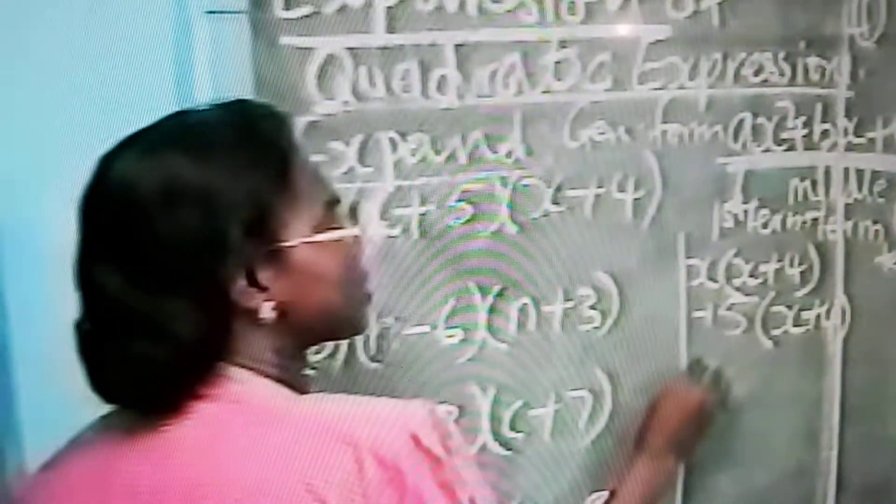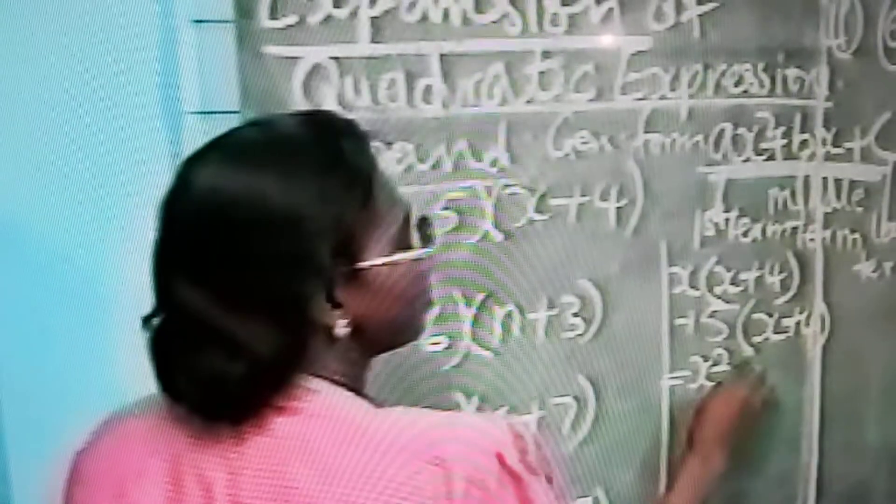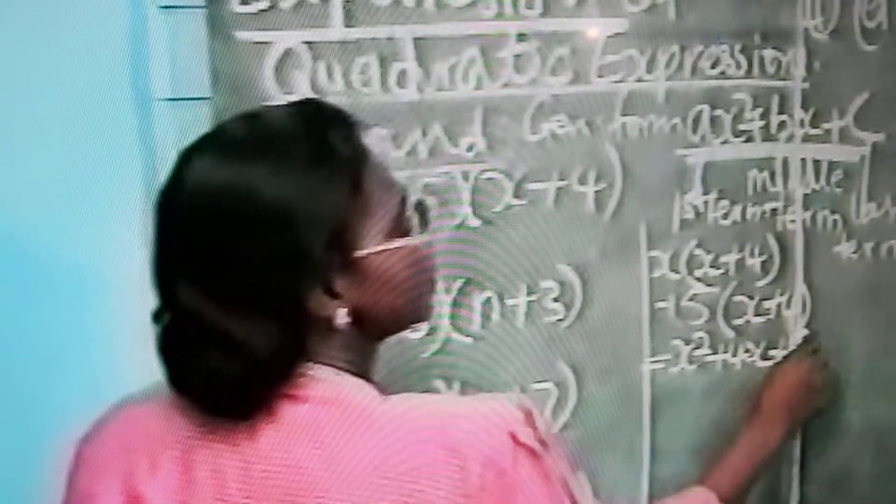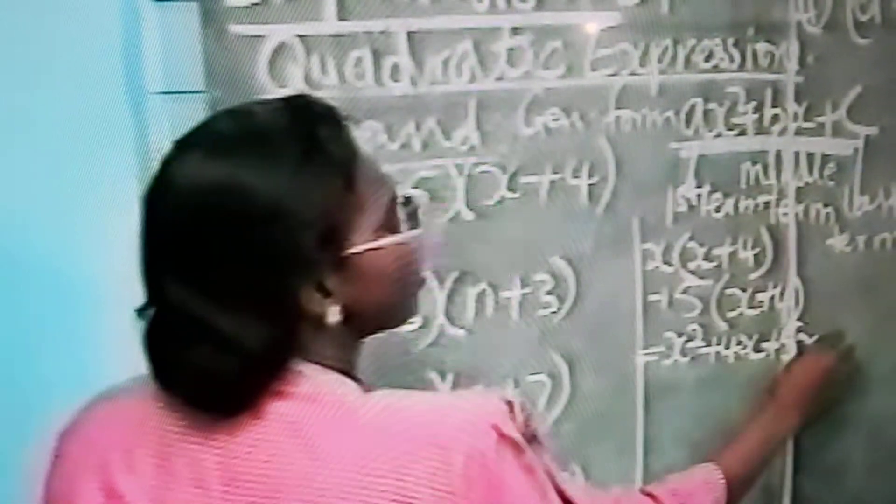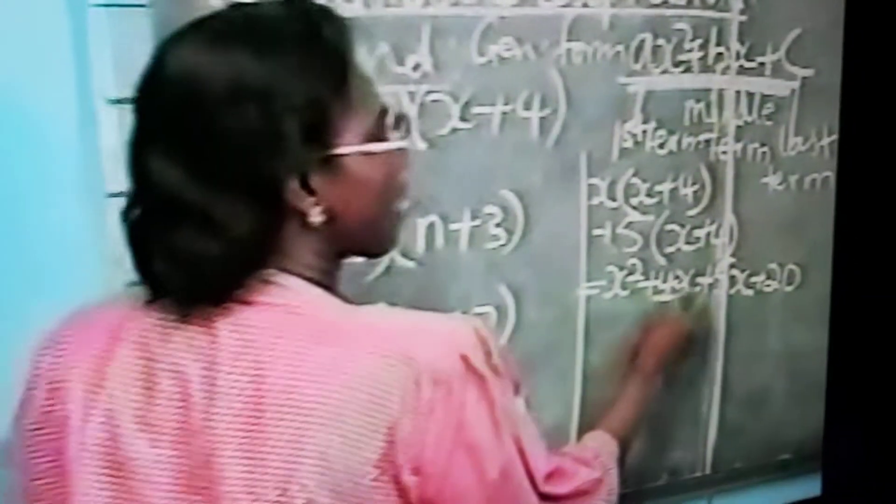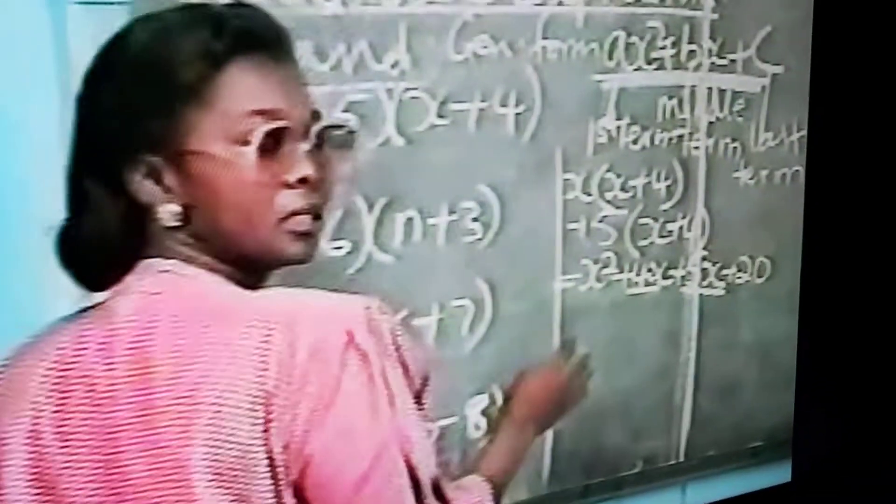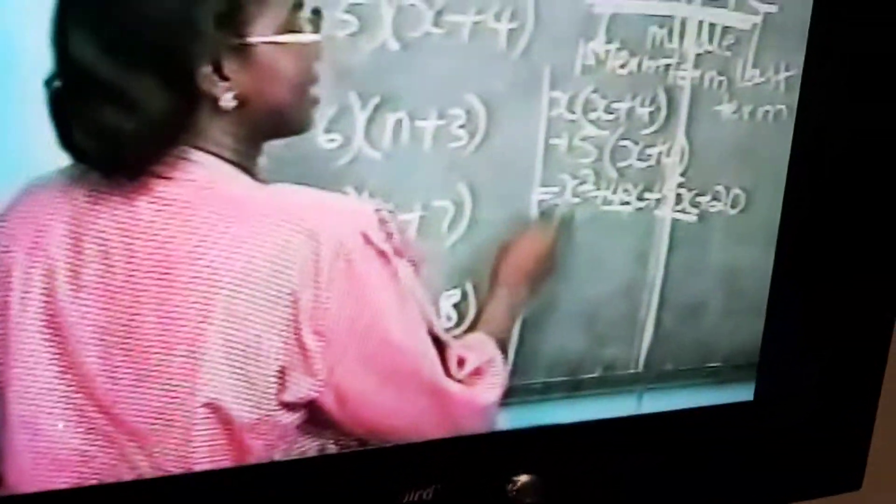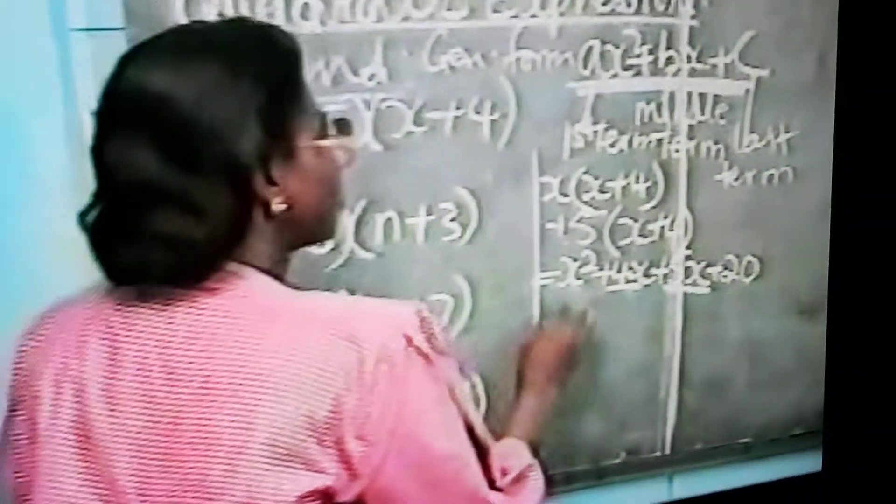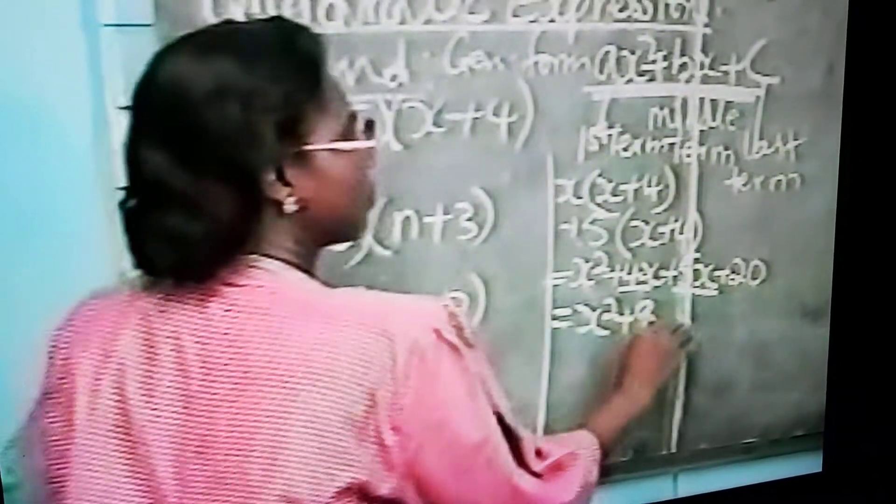Now if you expand this, x times x will give you x squared. Then x times 4 will give you plus 4x. Then 5 times x will give you plus 5x. And then 5 times 4 will give you plus 20. And from here, you will see that the 4x and the 5x are like terms. So we collect like terms. 4x plus 5x will be 9x. This hasn't got any terms that you can add to. 20 is the constant. You cannot add a number to a letter. So we have x squared plus 9x plus 20.